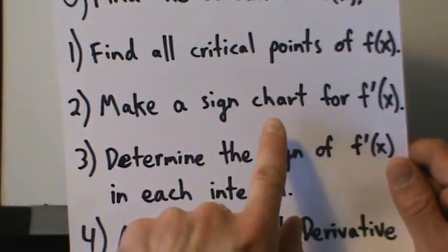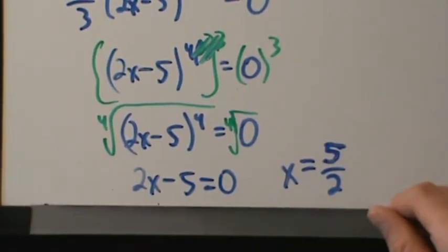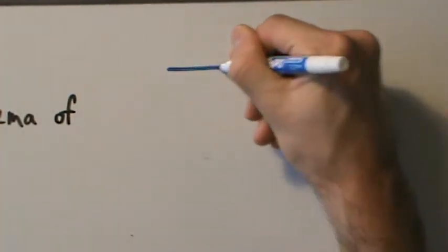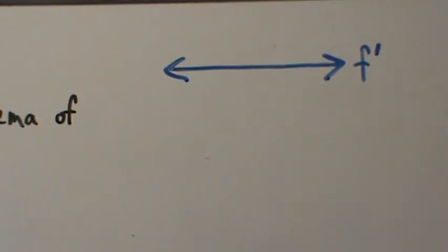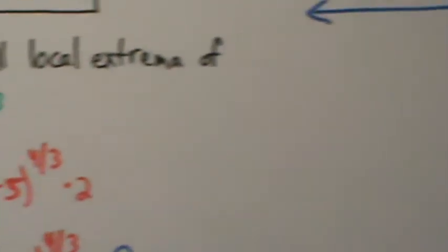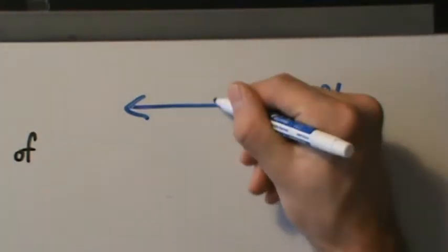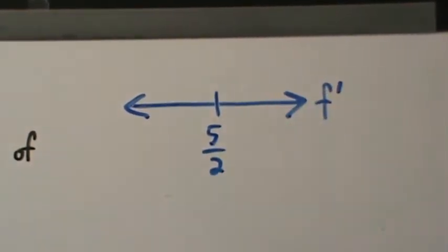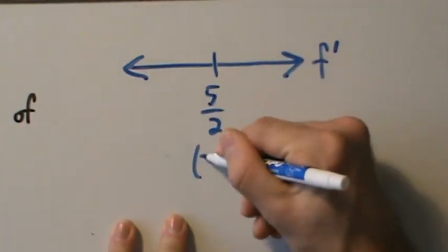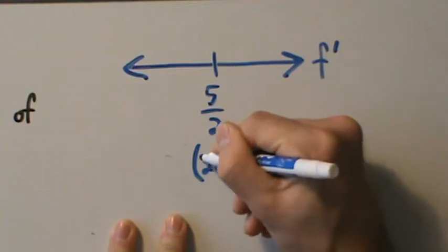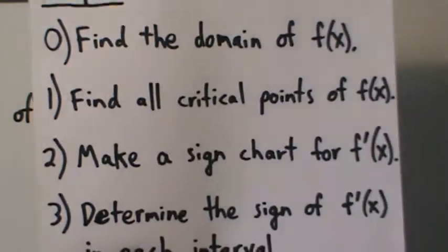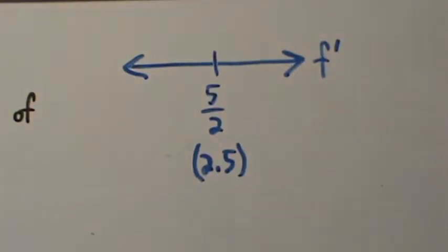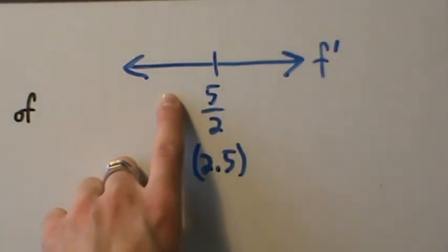Step 2: make a sign chart for f'(x). We make a sign chart using our only critical point. Always label the sign chart — our function is f and the derivative is f'. We place 5/2 (which equals 2.5) on the chart. This gives us two intervals: negative infinity to 5/2, and 5/2 to infinity.